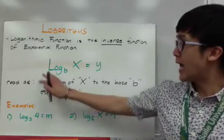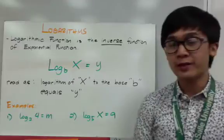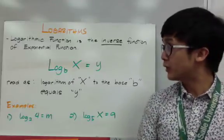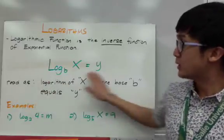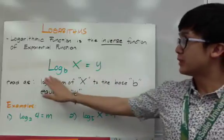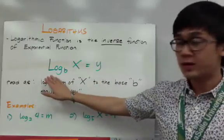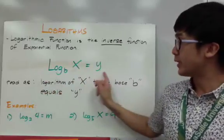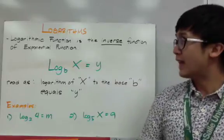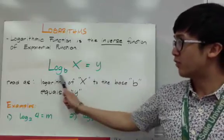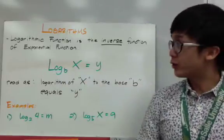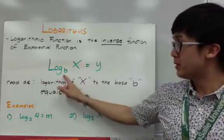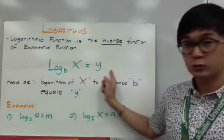We have here the notation for logarithm, and you need to read it correctly. To read the notation in standard form, it's logarithm of x base b is equal to y. You don't read it as logarithm of b — you read it as logarithm of x to the base b equal to y.